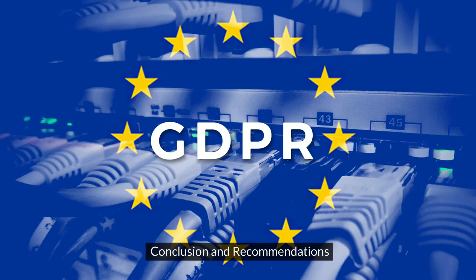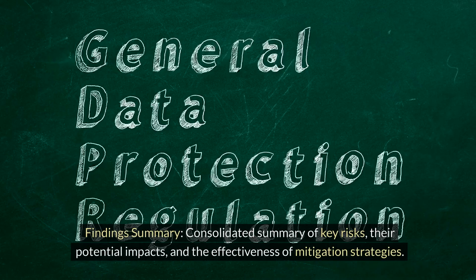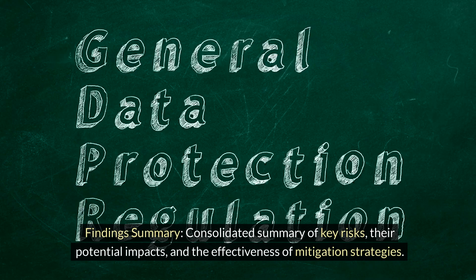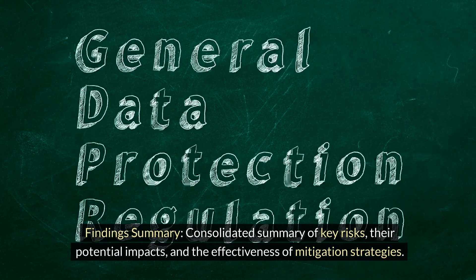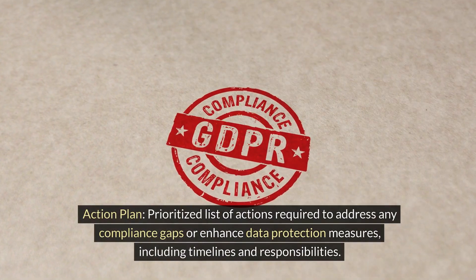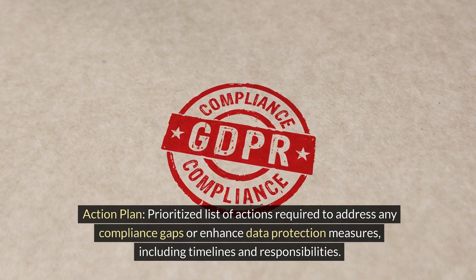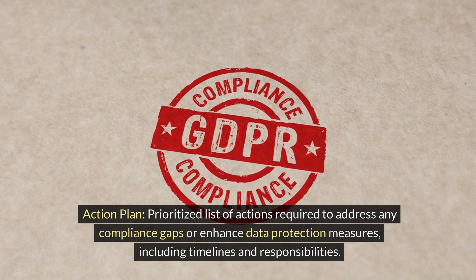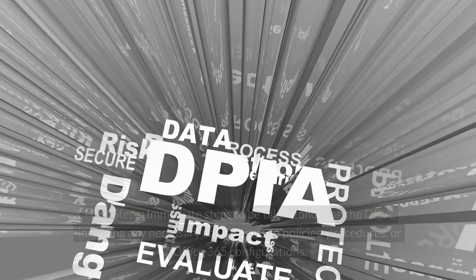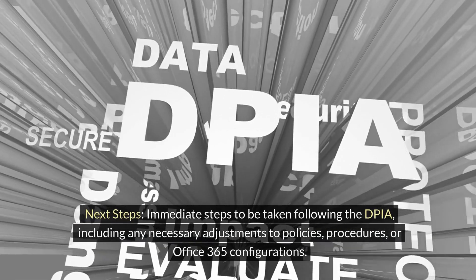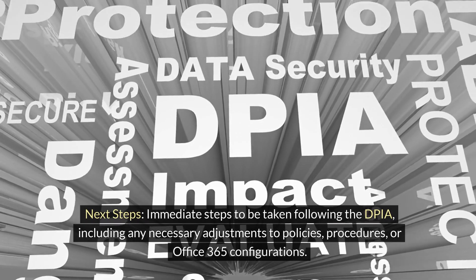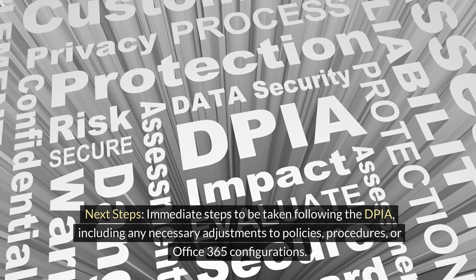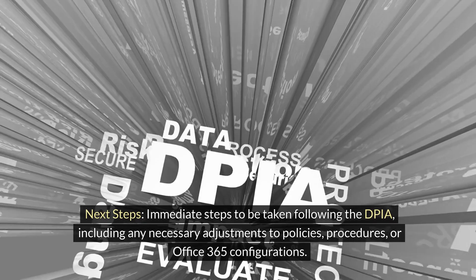Conclusion and Recommendations. Findings summary: Consolidated summary of key risks, their potential impacts, and the effectiveness of mitigation strategies. Action plan: Prioritized list of actions required to address any compliance gaps or enhanced data protection measures, including timelines and responsibilities. Next steps: Immediate steps to be taken following the DPIA, including any necessary adjustments to policies, procedures, or Office 365 configurations.